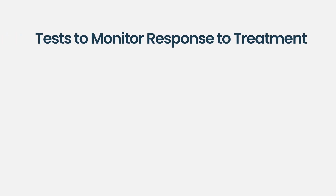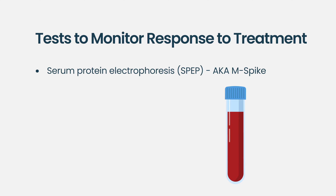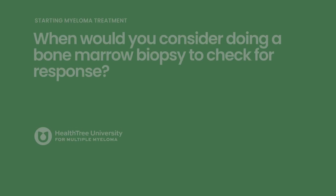There are a number of tests used to gauge response. For most patients we use the monoclonal protein — the M protein, also known as the M spike — measured via serum protein electrophoresis. For patients who don't secrete an M protein, we use the serum free light chain, which looks at the one component of an antibody the myeloma is producing, and we gauge that over time.